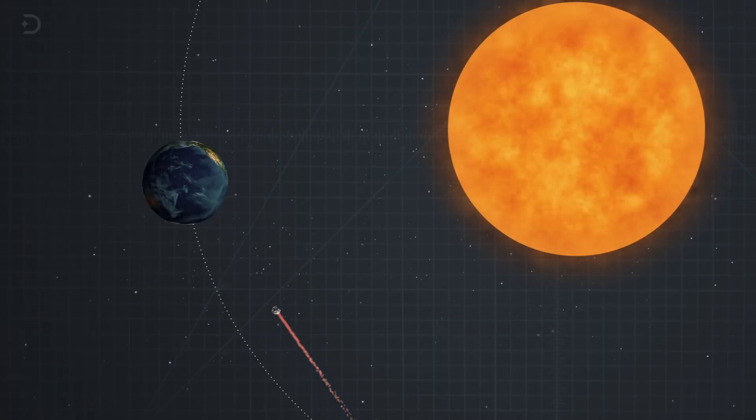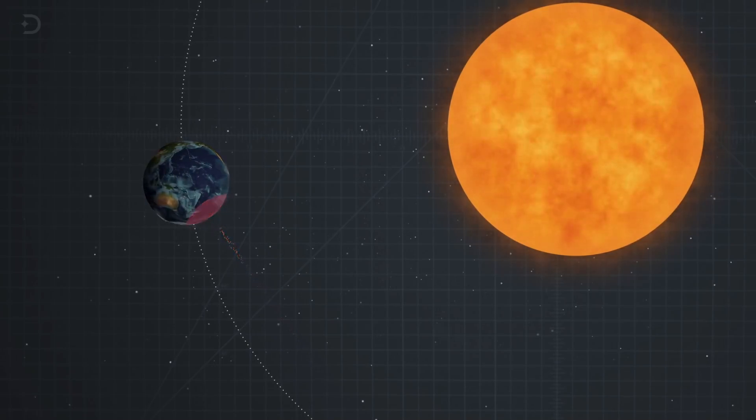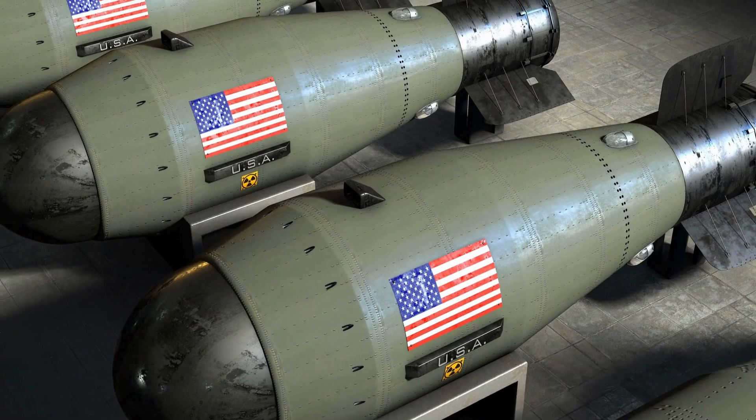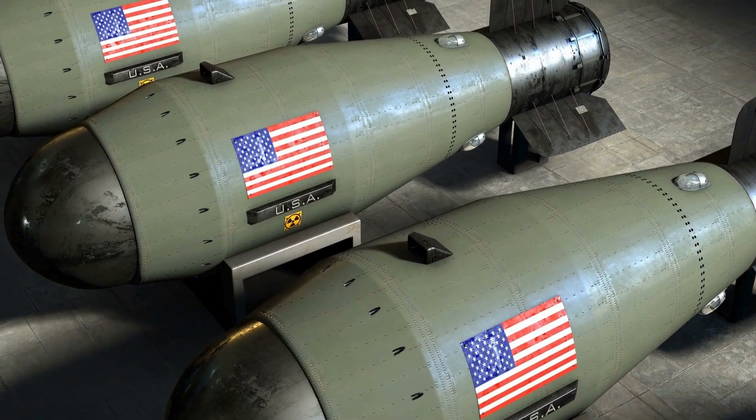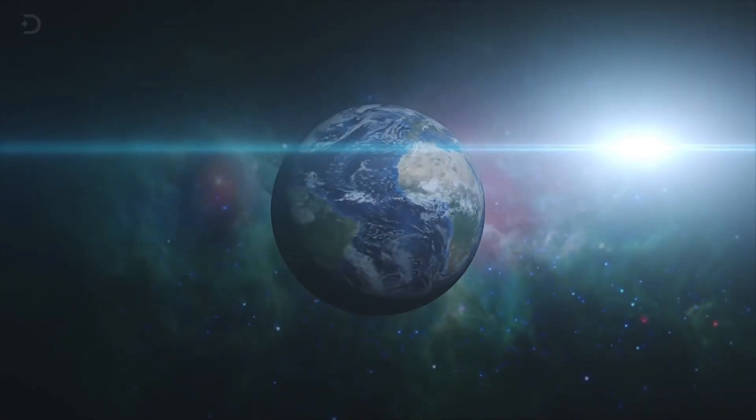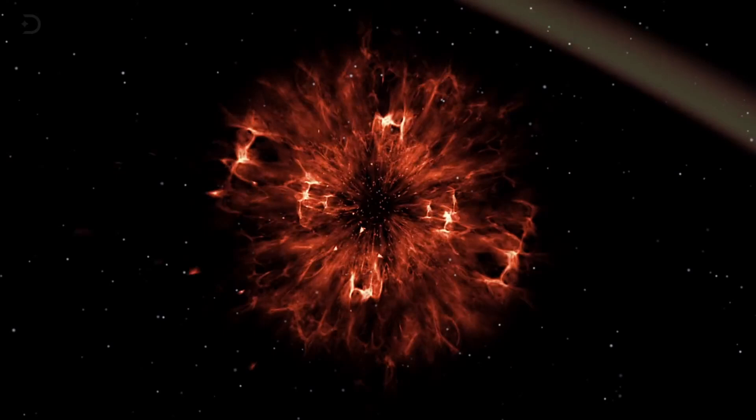But let's say, we really did destroy the Moon, what exactly would happen? Picture this, we've just decided to test our newest and most powerful new nuclear weapon with unknown power. It just so happens that this weapon is so powerful that it completely and accidentally destroys our Moon.